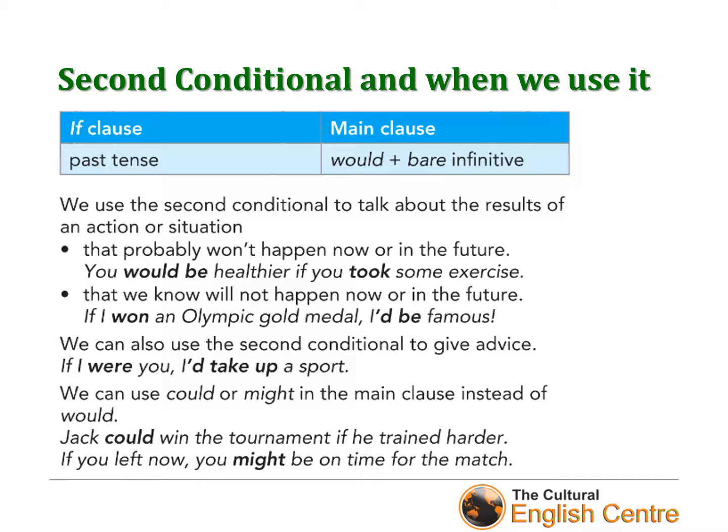We use the second conditional to talk about the results of an action or situation that probably won't happen now or in the future. For example: 'You would be healthier if you took some exercise' — and we know that will not happen. Or: 'If I won an Olympic gold medal, I'd be famous' — but for me, that's absolutely impossible.